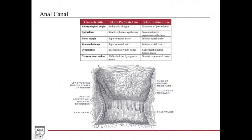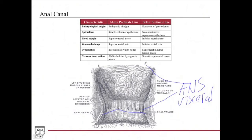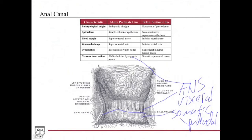Nervous innervation is also very important clinically. Above the pectinate line, you have ANS — visceral pain fibers — going to the inferior hypogastric plexus. Below the pectinate line, you have somatic innervation via the pudendal nerve. Because somatic pain is more specific and sharper, hemorrhoids and other lesions below the pectinate line are much more painful than those above it.